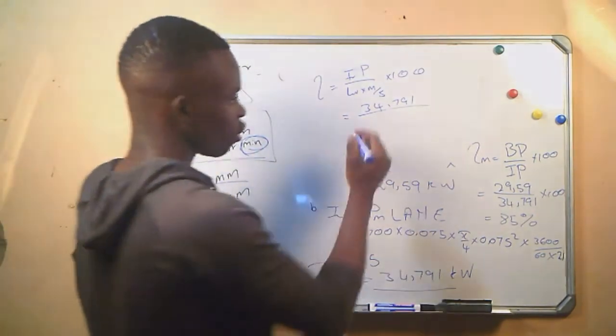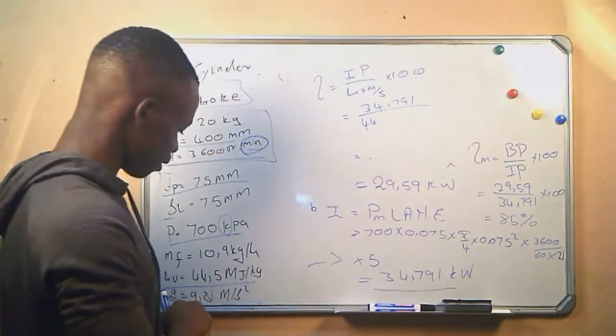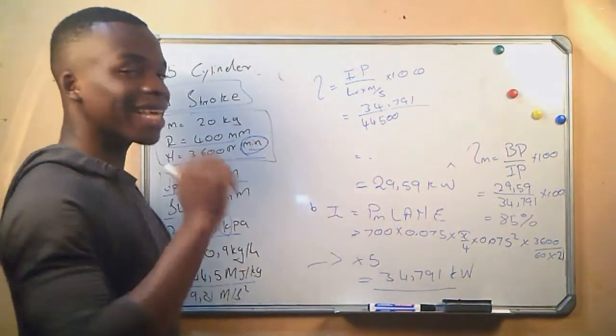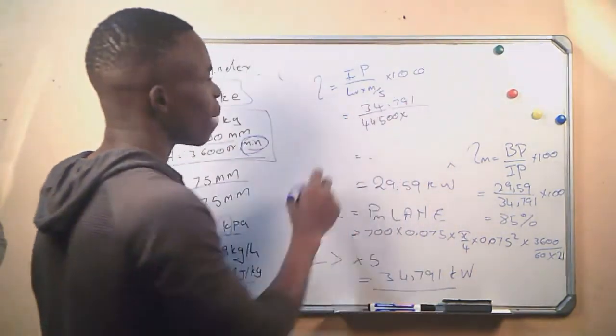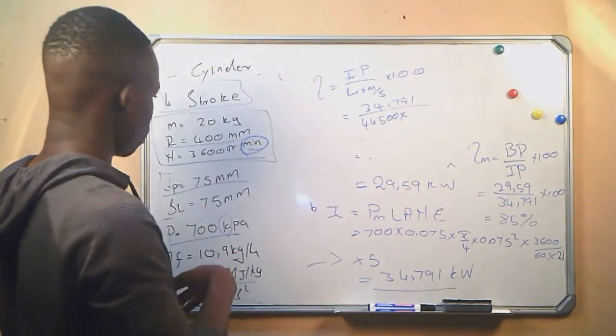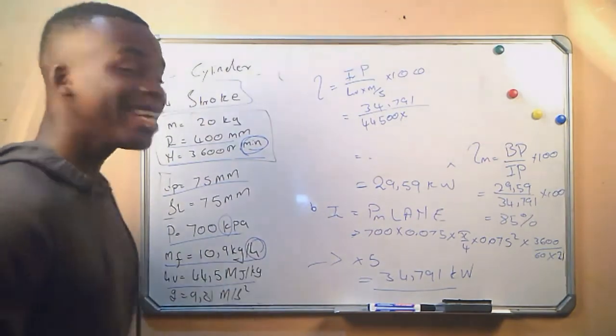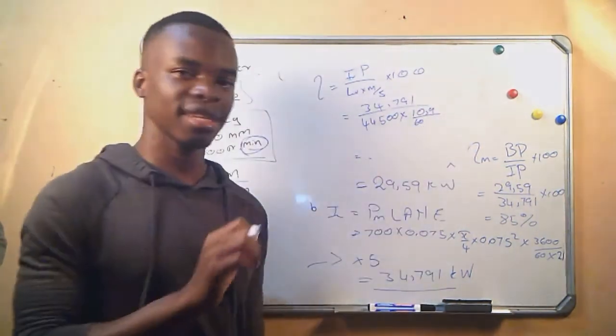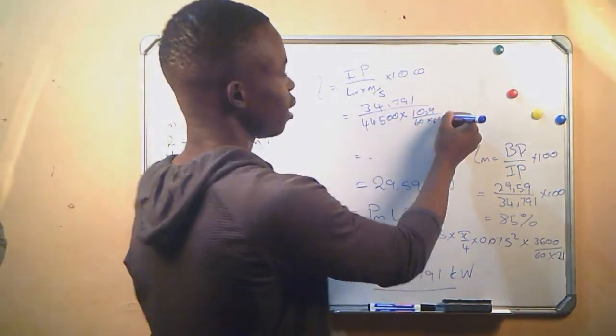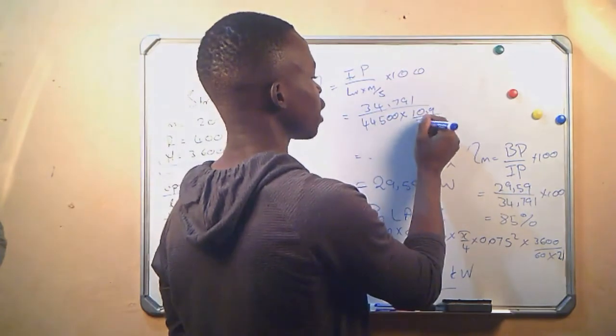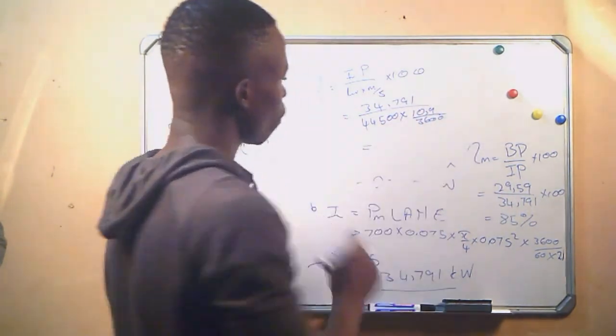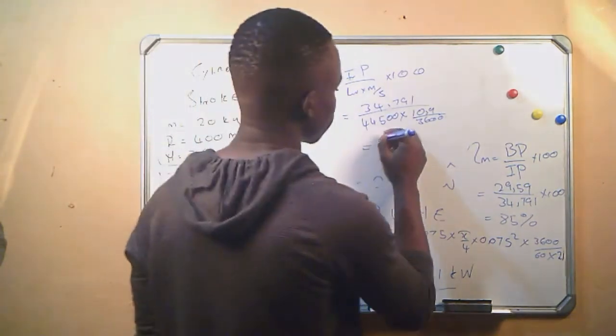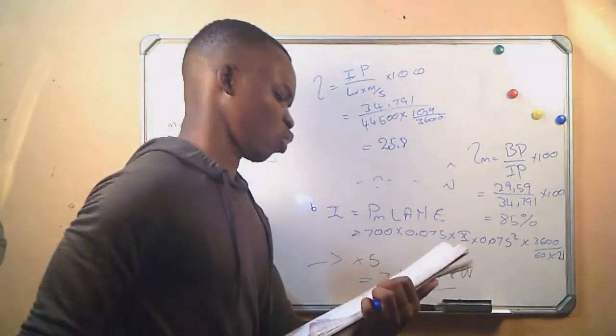And then times the mass of the fuel. Mass of fuel is in kg per hour, therefore we say 10.9 divided by 60 first turns it from hours to minutes, and then divide by another 60 to turn it from minutes to seconds, or you can just say 3600. From here we get our efficiency, which is 25.82 percent.